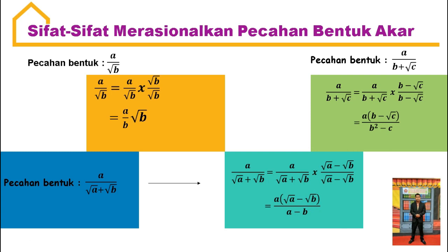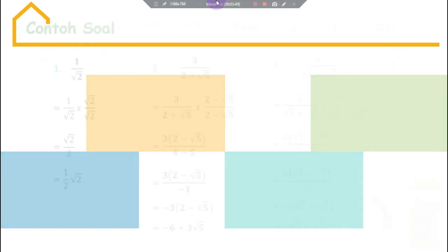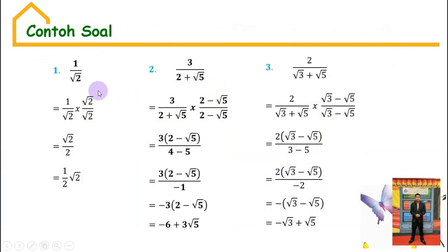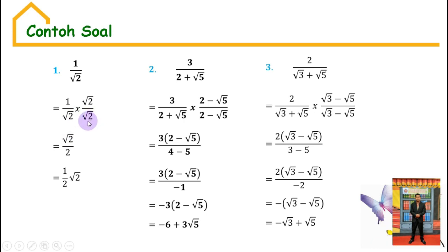Untuk lebih jelasnya, kita langsung ke contoh. Di sini ada tiga contoh soal. Yang pertama: satu per akar dua. Cara merasionalkan yaitu dikalikan penyebutnya. Maka sama dengan satu per akar dua dikali akar dua per akar dua. Maka satu dikali akar dua adalah akar dua; akar dua dikali akar dua hasilnya dua. Maka disederhanakan lagi menjadi setengah akar dua.